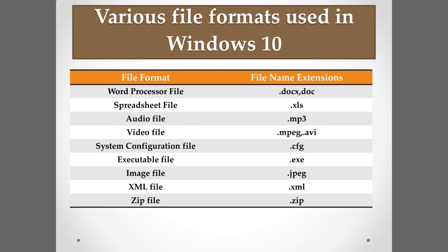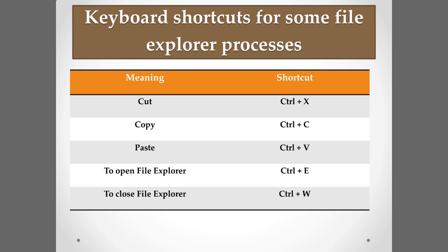System configuration files — used by the operating system to perform its operations — have the extension .cfg. Executable files, which contain software or application programs, use the extension .exe. Image files use .jpeg or .jpg. XML (Extensible Markup Language) files, used for creating websites, use .xml. Compressed files use the extension .zip. These extensions are used in all versions of Windows.